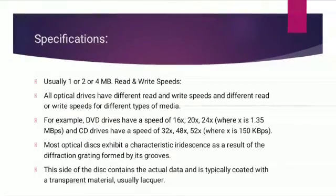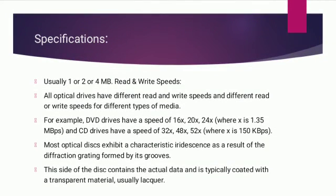Specifications include one, two, or four MB/s read and write speeds. All optical drives have different read and write speeds for different types of media. For example, DVD drives have speeds of 16x, 20x, or 24x where 1x equals 1.3 MB/s, and CD drives have speeds of 32x, 48x, or 52x where 1x equals 150 KB/s. The data side of the disc contains the actual data and is typically coated with a transparent material.